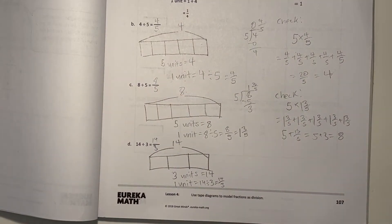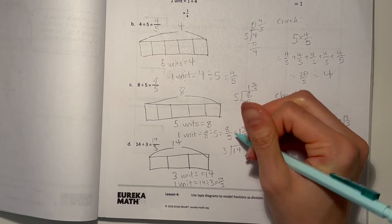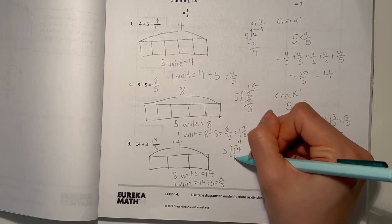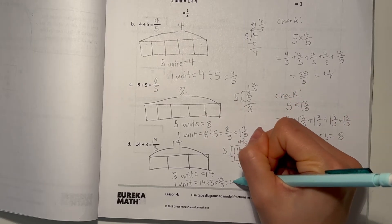And our long division will be 14 divided by 3. 3 goes 4 times into 14, minus 12, 2 left over. So that's 2 thirds. 4 and 2 thirds.